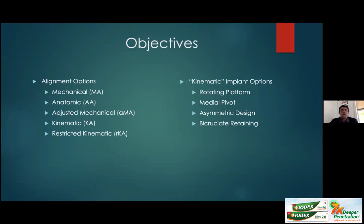The idea is to compare alignment philosophies and implants to find what fits best in your practice. Unlike total hip replacement, total knee replacement has an 85–90% success rate with a 10–15% chance of failure and patient dissatisfaction. We don't fully understand why some patients are failing — whether it's an alignment issue, an implant issue, or both. Let's explore this with the current evidence.